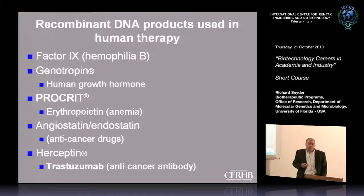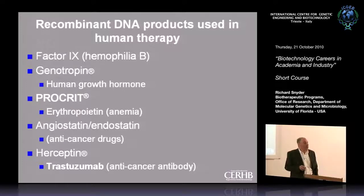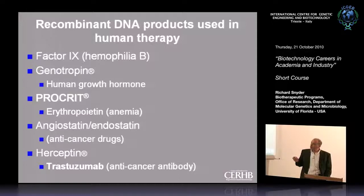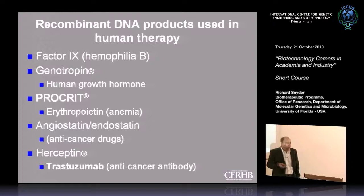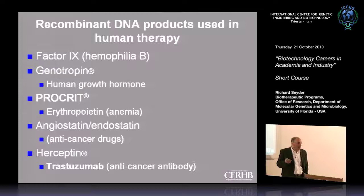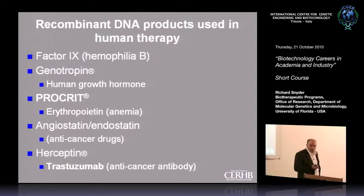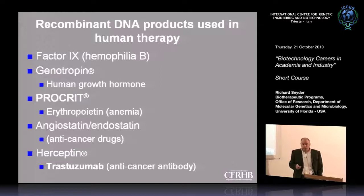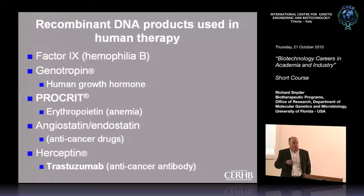To give you the economic perspective of what these proteins are capable of, this is a short list of recombinant proteins that are for sale. Each one of these generates billions of dollars in revenue. This is what makes Genentech and Bayer and these large companies grow, prosper, and have money for R&D. This is a real economic engine to develop these products and improve people's lives.